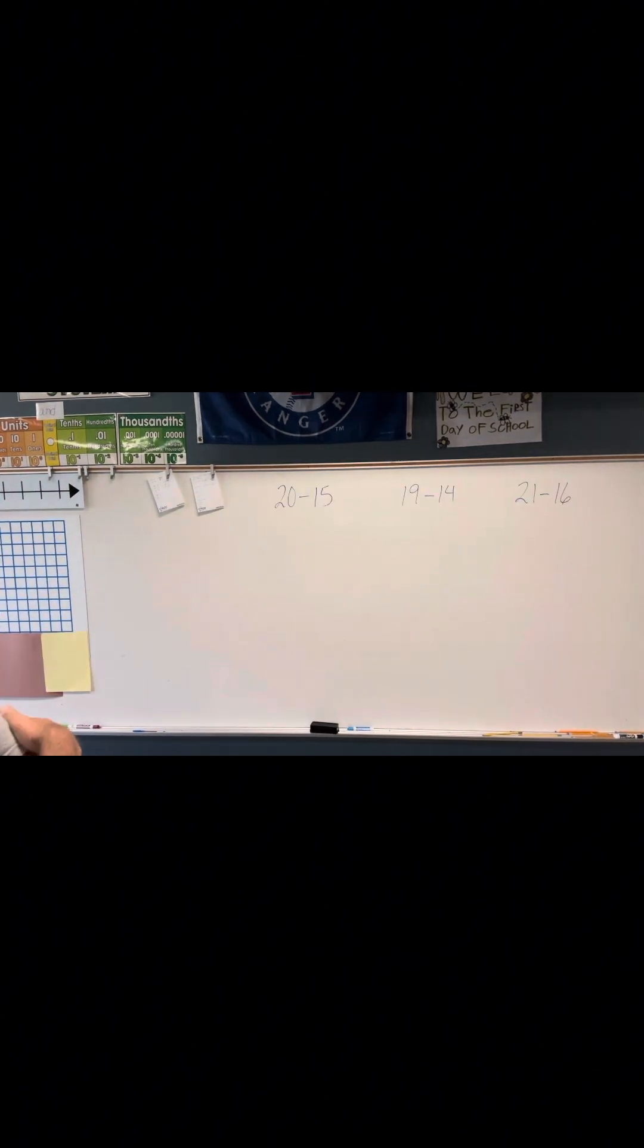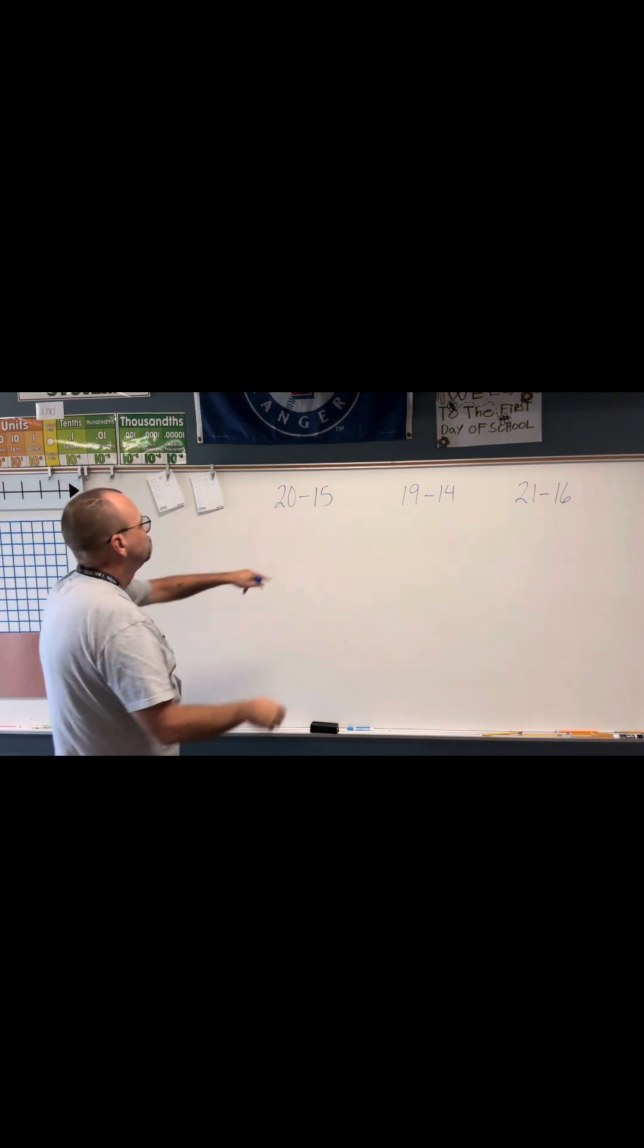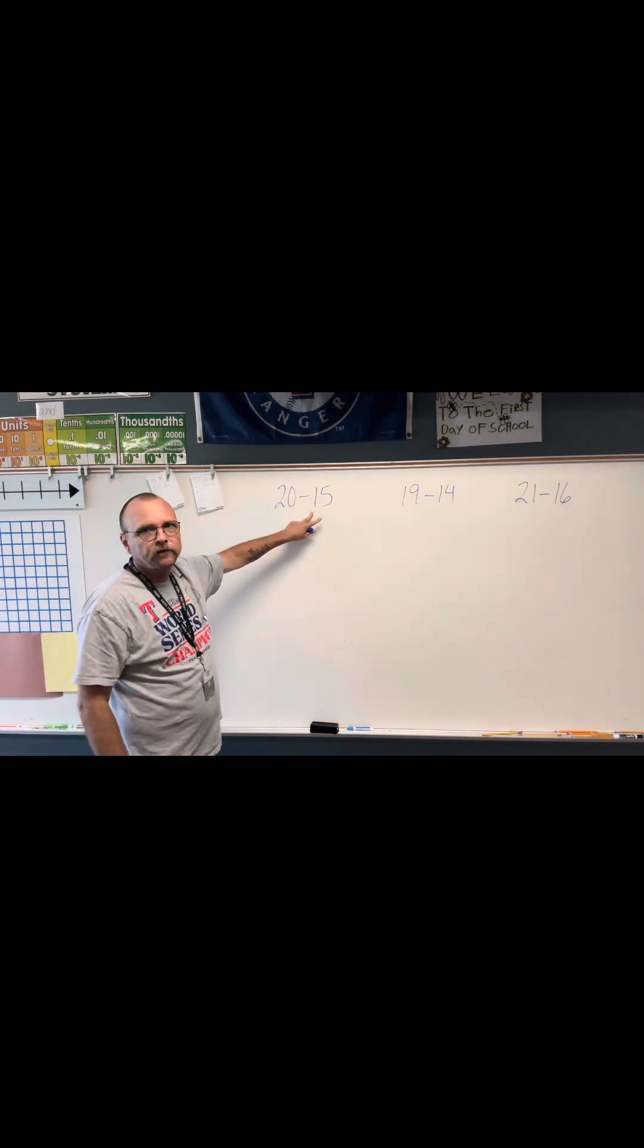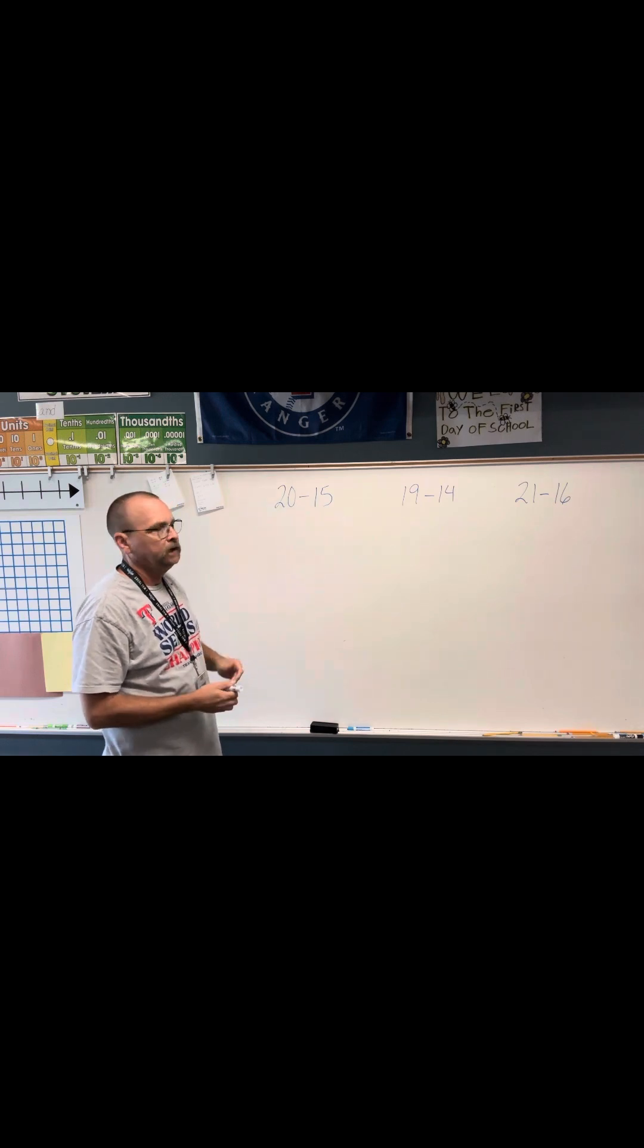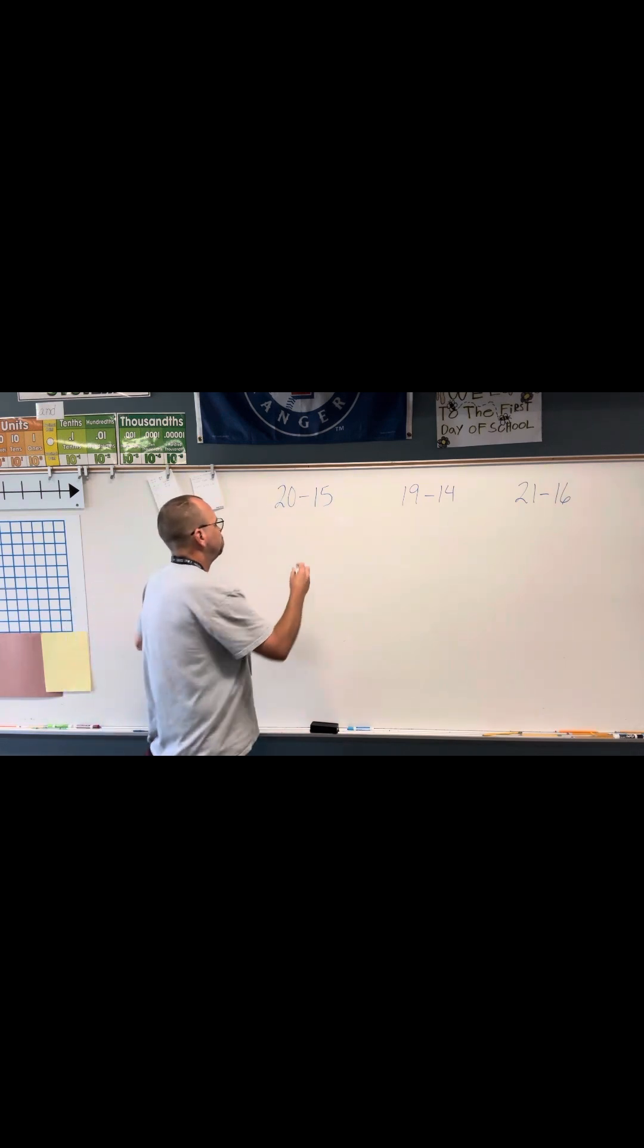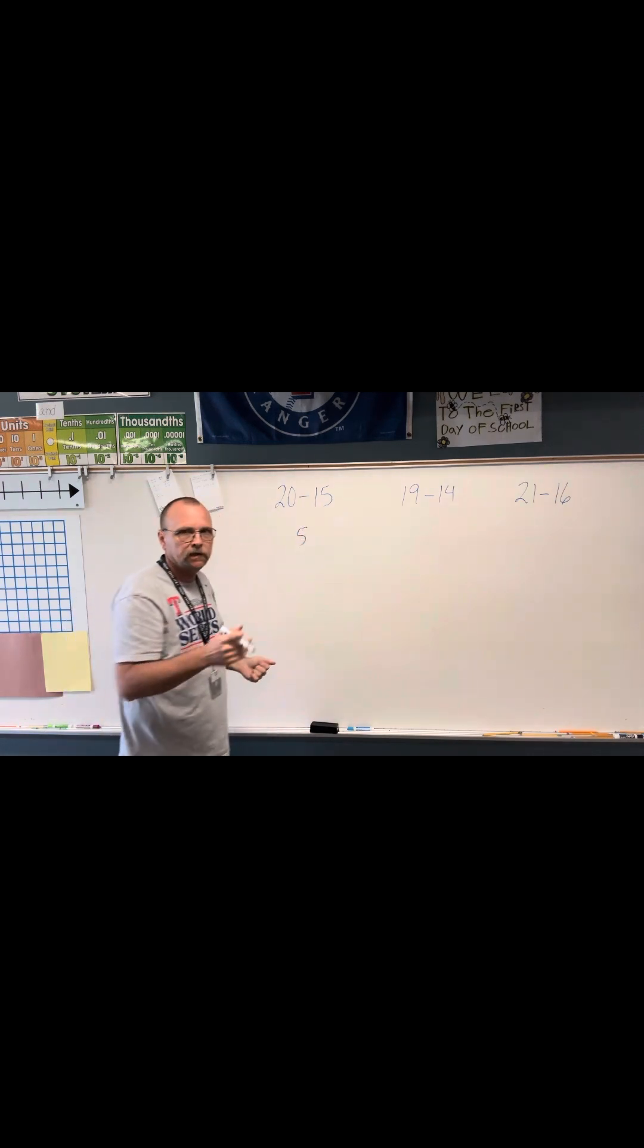Looking at our subtraction, we have an easy problem here. We have 20 subtract 15, so find the difference of 20 and 15. Obviously, that is 5. Very easy. We can do it in our head.